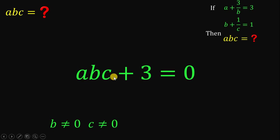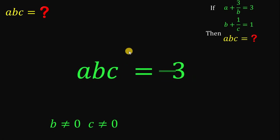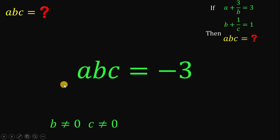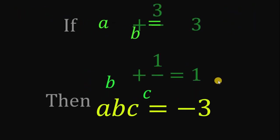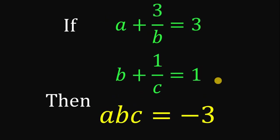So we now have abc plus 3 equals 0. Subtracting 3 from both sides gives us the value of the product abc equals negative 3. Therefore, our answer to this question is negative 3. And as always, we are done.